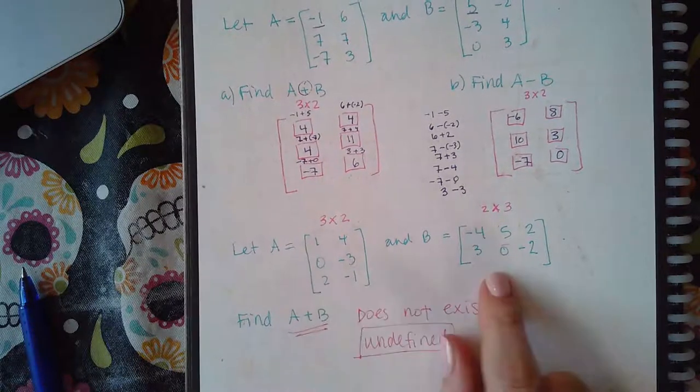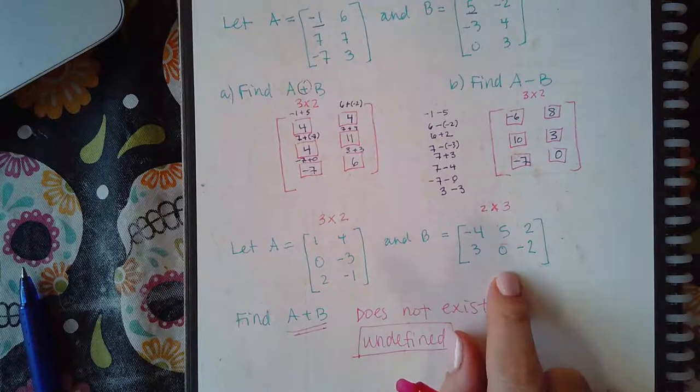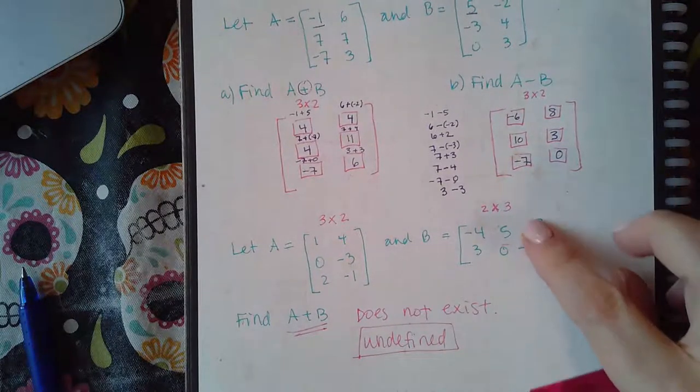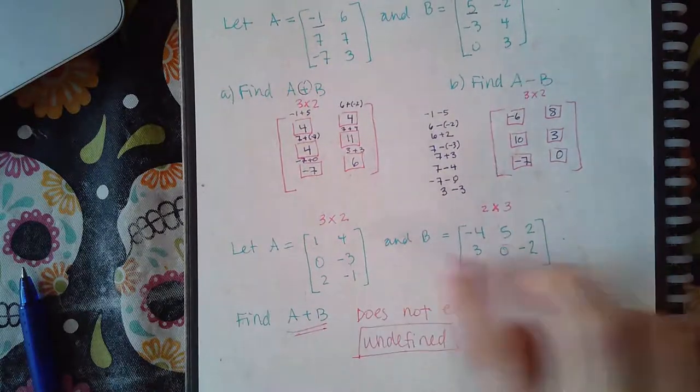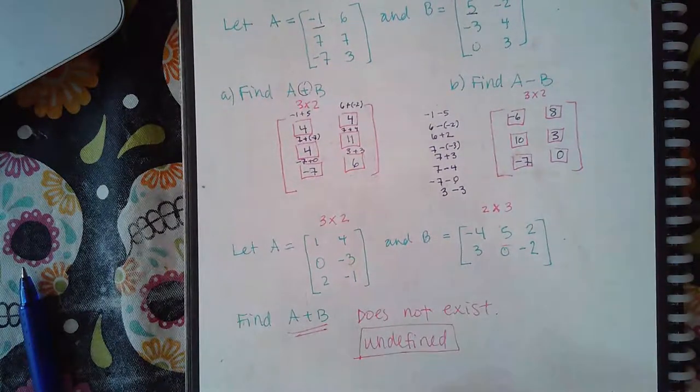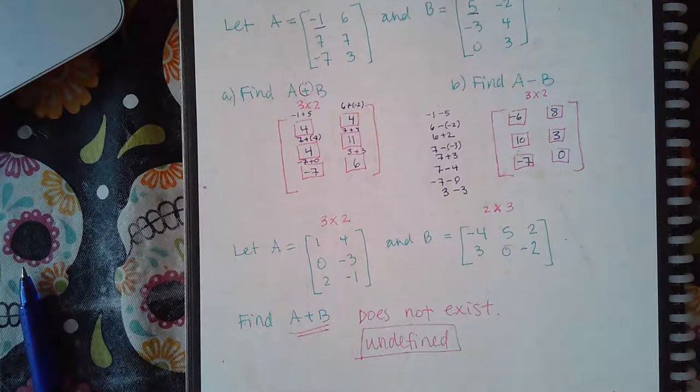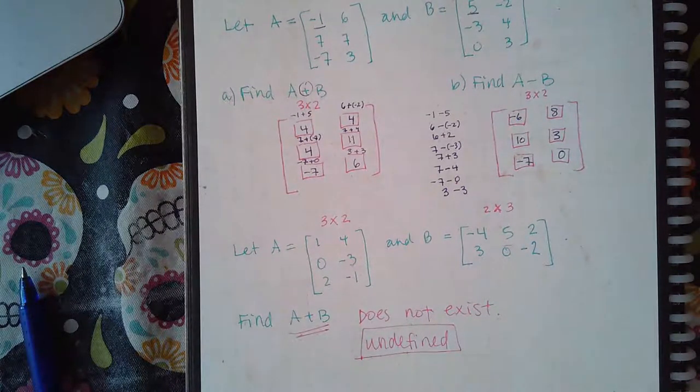But, as soon as you get down to this, there's no third row over here. So, you can't put the two with the negative one with anything. And there's no third column over here. So, these guys can't go with anybody over here. You can't just make these guys go with that guy. It doesn't work like that. They have to line perfectly, or it's undefined.